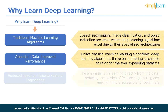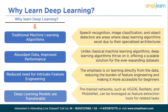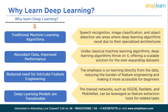Another significant advantage is the reduced need for intricate feature engineering. Traditional methods often require complex manual feature extraction, but in deep learning the emphasis is on learning directly from the data, reducing the burden of feature engineering and making it more accessible for beginners. Additionally, deep learning models are transferable — pre-trained networks such as VGG16, ResNets, and MobileNet can be leveraged as feature extraction tools for related tasks, accelerating model training and enhancing performance especially with limited data and computational resources.